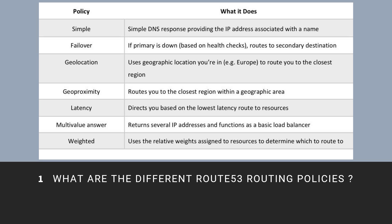Multivalue answer: returns several IP addresses and functions as a basic load balancer. Weighted policy: uses the relative weights assigned to resources to determine which to route to.